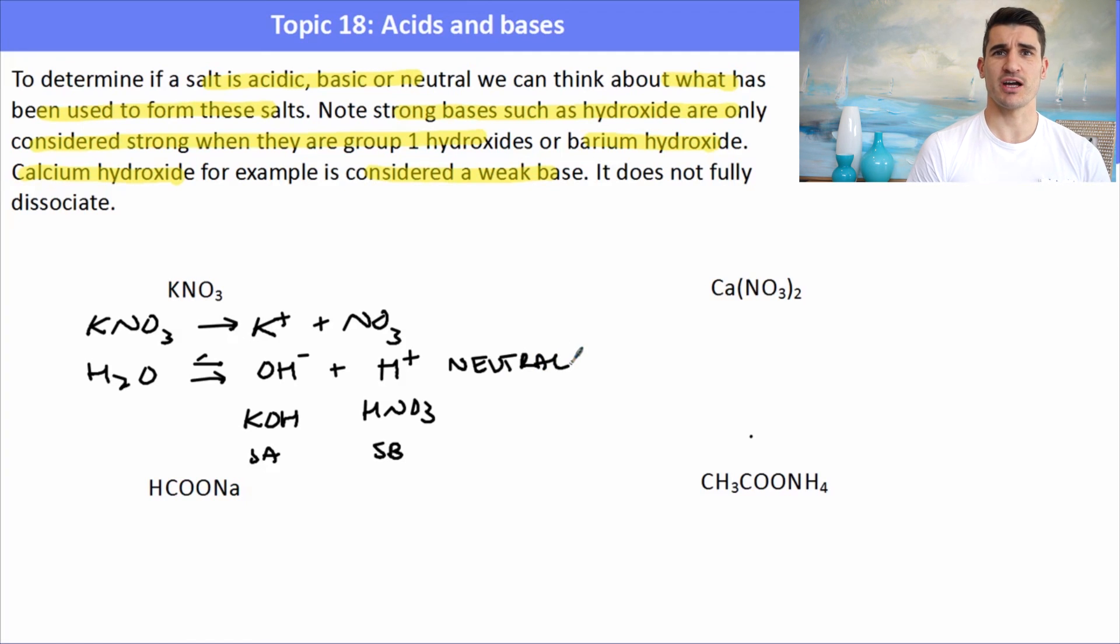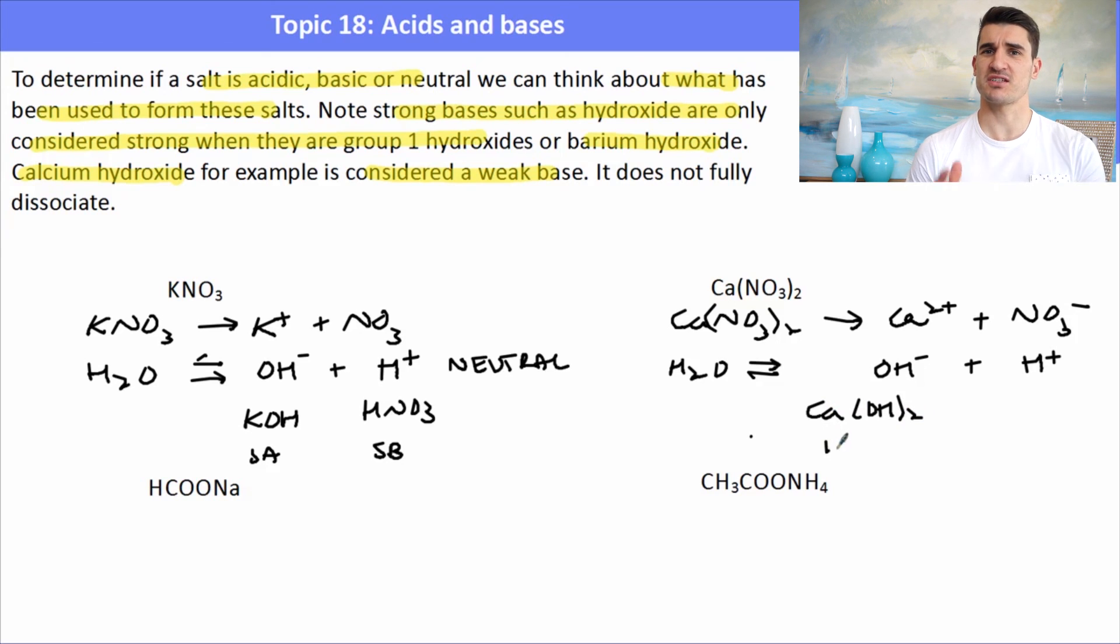Ca(NO3)2 calcium nitrate would dissociate into calcium ions and nitrate ions. If we include the self-ionization of water, we would form H3O plus or H plus and OH minus. From the information above, we said that calcium hydroxide is not considered to be a strong base, it's considered to be a weak base. HNO3 is a strong acid. So here we have a case of a strong acid versus a weak base, so that will be slightly acidic.